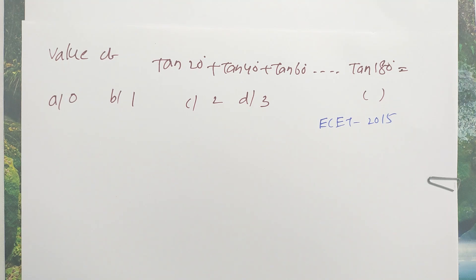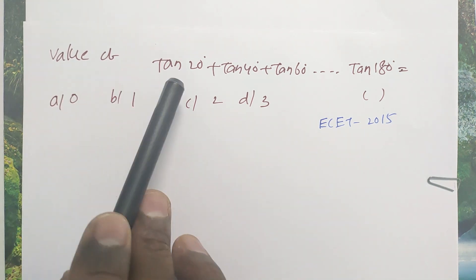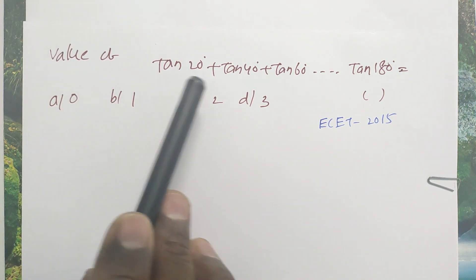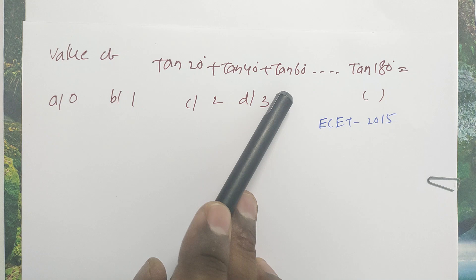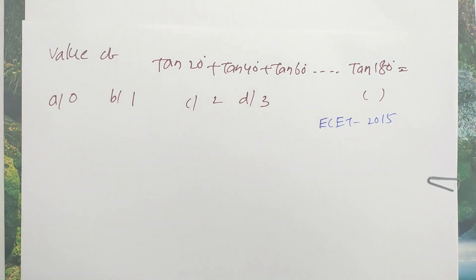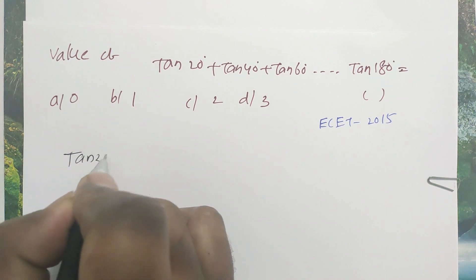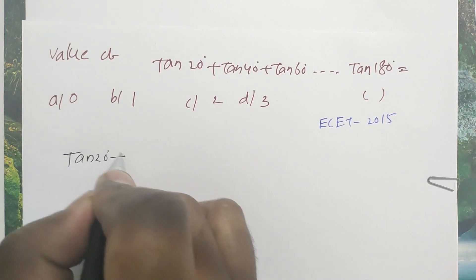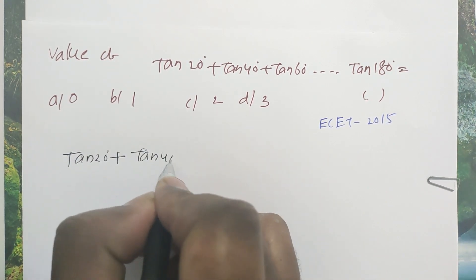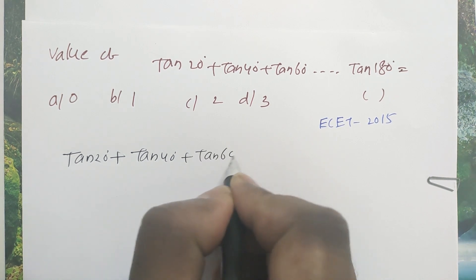Hi friends, welcome to the D for Dipconce channel. I am going to show you the previous question. The value of tan 20 degrees plus tan 40 degrees plus tan 60 degrees, and so on up to tan 180 degrees.